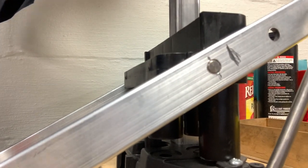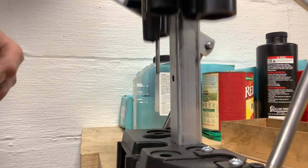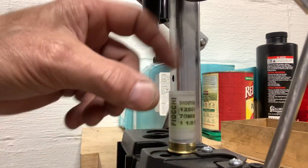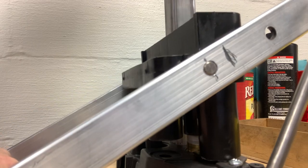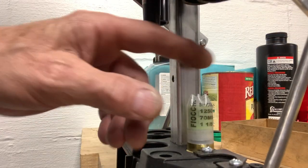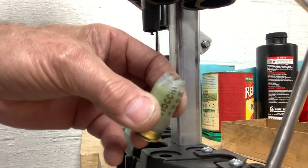Now we're at the Lee Load-All. Now as you can see I'm using the six point crimp in the back. Come down there and give out a six point crimp. There it is, six point crimp.